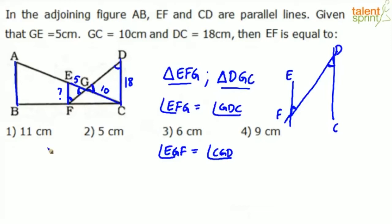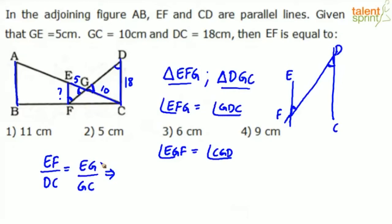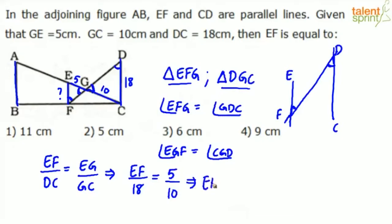Now that the triangles are similar, take the ratio of corresponding sides. EF divided by DC equals EG divided by GC. Substituting the values: EF by 18 equals 5 by 10, giving EF equal to 9 centimeters.